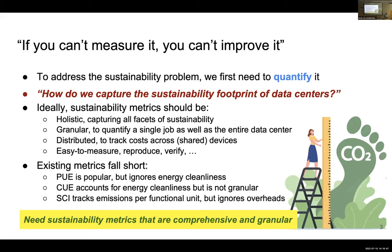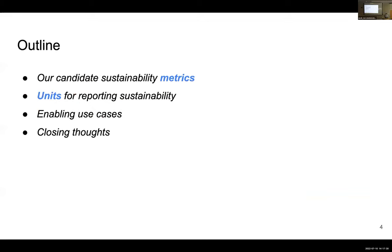Unfortunately, existing metrics fall short. The popular Power Usage Effectiveness (PUE) ignores energy source cleanness. The Carbon Usage Effectiveness (CUE) accounts for energy cleanness but is not granular — we cannot collect information for individual jobs. The Software Carbon Intensity (SCI) metric tracks emissions per functional unit but ignores system overhead and does not consider quality of service. I'll present candidate metrics and discuss units beyond grams of CO2 equivalent, then cover use cases.